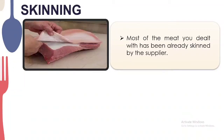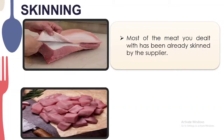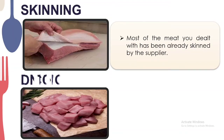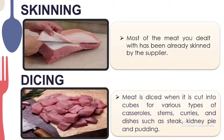The next preparation method is dicing. Meat is diced when it is cut into cubes for various types of casseroles, stews, curries, and dishes such as steak and kidney pie. This is the type of cut you see in dishes like menudo — when meat is cut into cubes, that is called dicing.